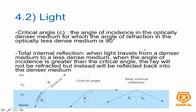Total internal reflection is when light travels from a denser medium to a less dense medium. When the angle of incidence is greater than the critical angle, the ray will not be refracted but instead will be reflected back into the denser medium. When your angle theta one is greater than the critical angle, total internal reflection takes place. Remember that all this applies when you're moving from a dense medium into a less dense medium.